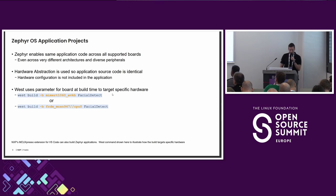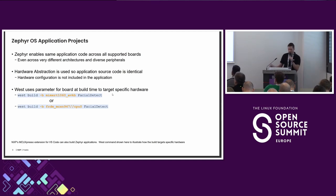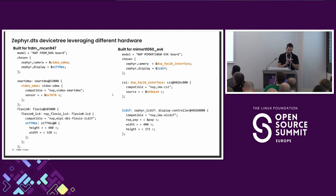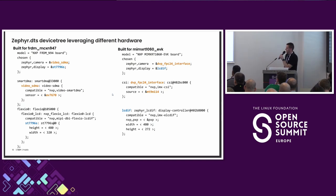The hardware abstraction layer means we have the same source code, but different device trees and Kconfig files for each platform — only those are different per project, while the main application remains the same. Here is a sample WestBuild command: you only specify your target board and it builds and runs. The differences in the device trees are based on the interfaces and peripherals being used, so all you need to do is change the device tree according to your peripherals and platform.